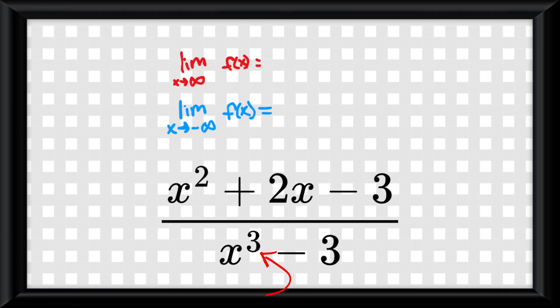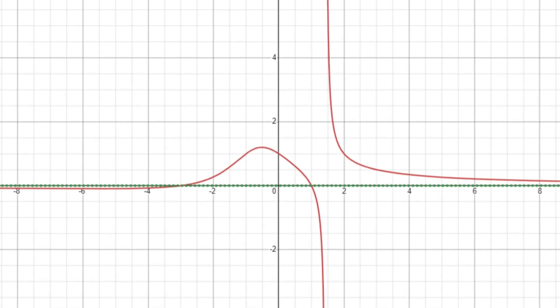If there is a higher degree in the denominator compared to the numerator, the function is said to be bottom-heavy. The limit as x approaches negative or positive infinity of f of x will be zero. This is because there will be a horizontal asymptote at y equals zero.